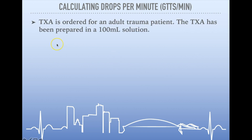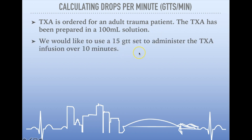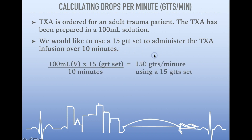Our next problem: TXA has been ordered for an adult trauma patient. The TXA has been prepared in a 100 milliliter solution. We'd like to use a 15-drop set to administer our TXA over 10 minutes. Setting our formula up: 100 milliliters multiplied by 15 (our drop set), divided by 10 minutes — that gives us 150 drops per minute using a 15-drop set to deliver the TXA over 10 minutes.